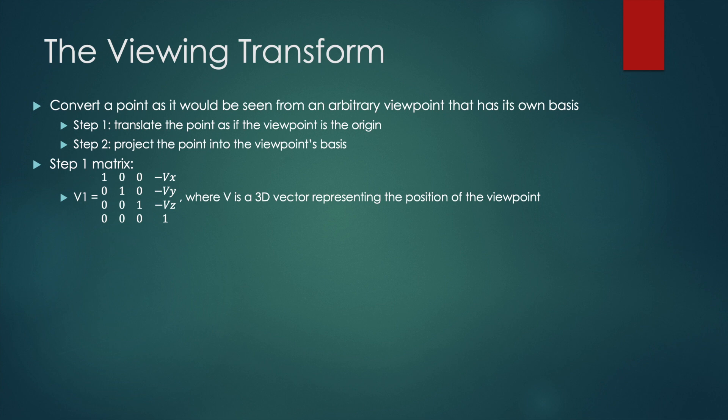The matrix from step one is as follows. As we can see, this is just a translation matrix that subtracts the viewpoint from whatever point is being multiplied with it, where vx, vy, and vz are the three components of the viewpoint's coordinates.